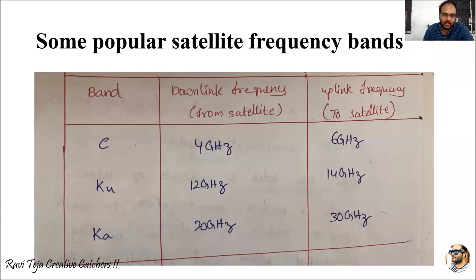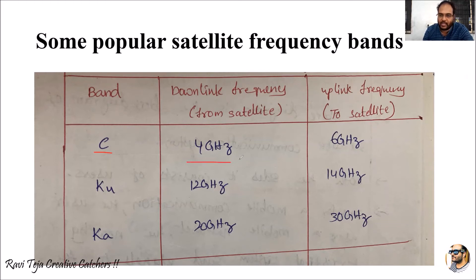For C band: the downlink frequency — that is, the signal coming from the satellite towards the earth station — is around 4 GHz. The uplink frequency — when you want to transmit a signal from the earth station to the satellite — is around 6 GHz in C band.